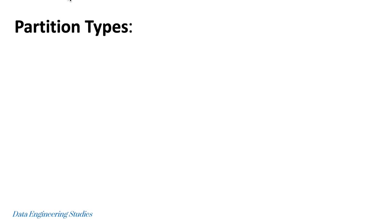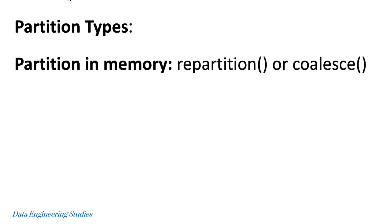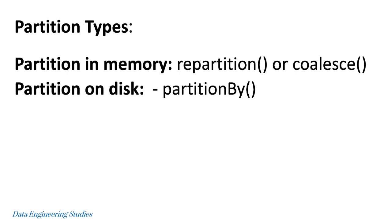Now let's see the different types of partition. Partition can be classified into two: partition in memory and partition on disk. To perform partition in memory, we use repartition or coalesce transformation. To perform partition on disk, we use the partitionBy function.